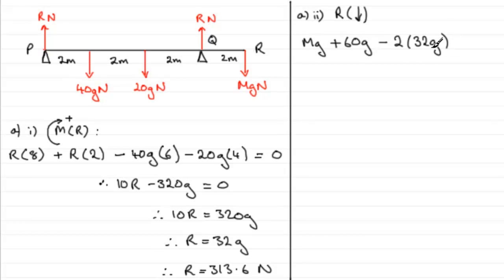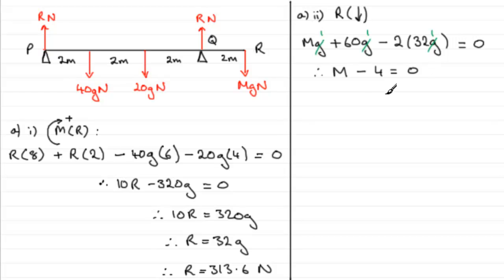This is the resultant force acting on the plank. Because it's in equilibrium, that resultant force must equal zero. I can see there's a G in each of the terms, so I can cancel that out — divide each term by G. That gives M plus 60 minus 64 equals zero, so M minus 4 equals 0. Adding 4 to both sides, M equals 4.